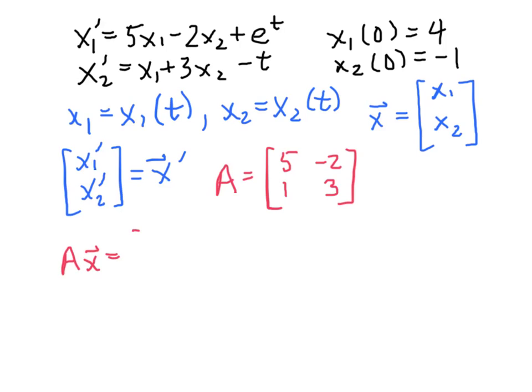And we can see that if we take A times the vector x, what we get is we have [5 -2; 1 3] times the vector [x1; x2]. And the result, of course, is another vector, and the first component of that is 5x1 - 2x2, and the second component is x1 + 3x2.